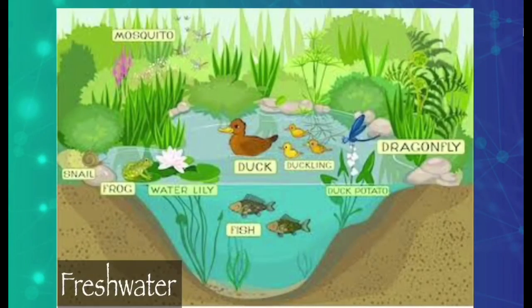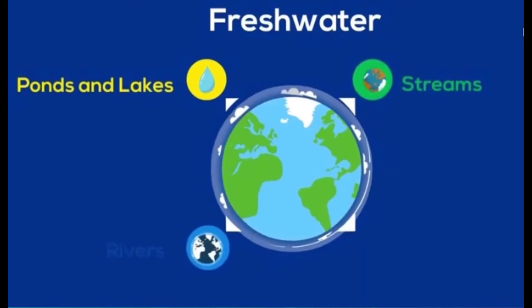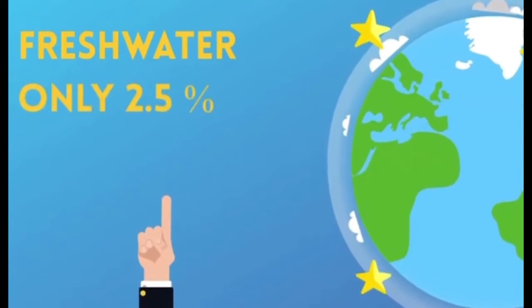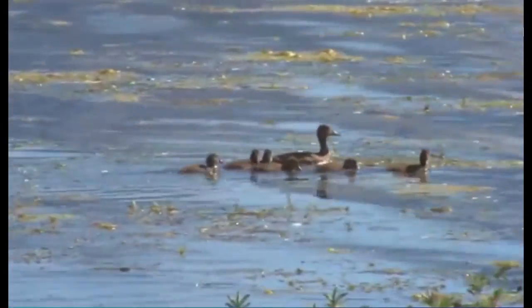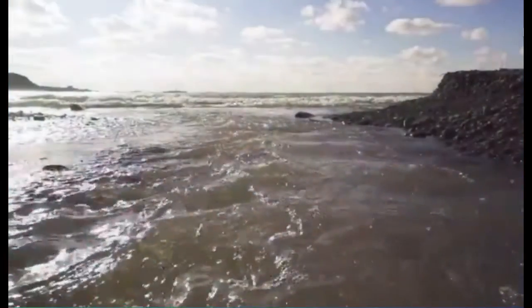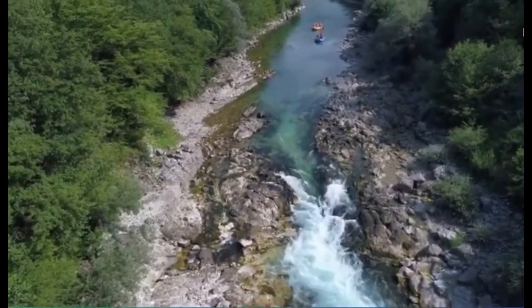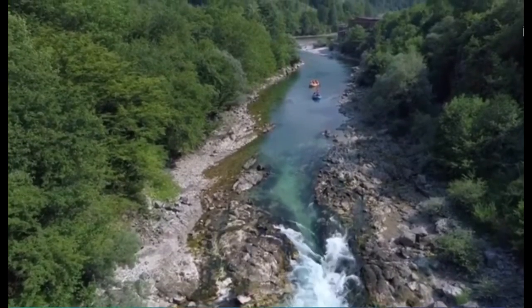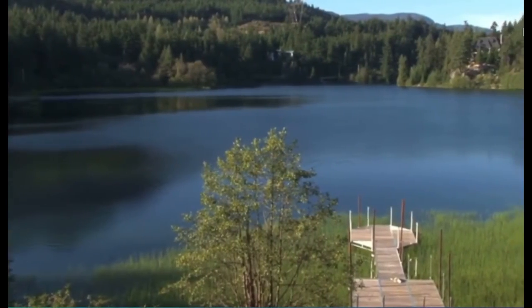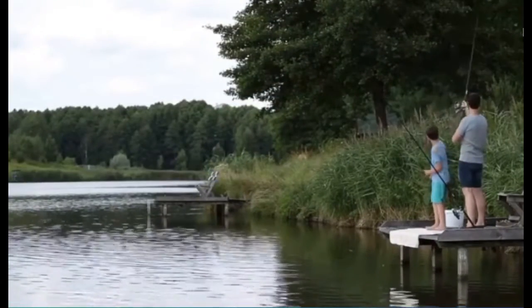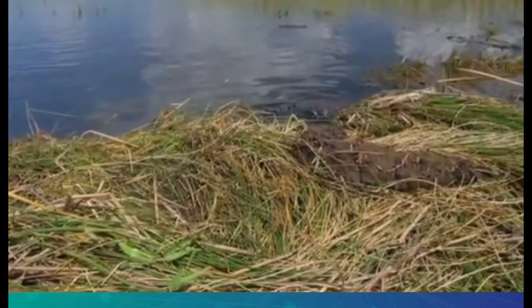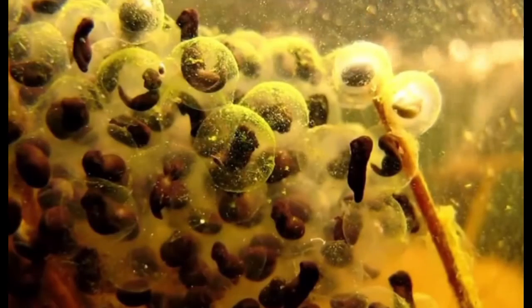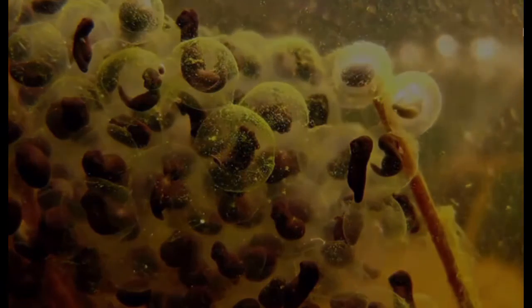Freshwater ecosystems: lakes, ponds, rivers, and streams are freshwater bodies with a low salt content. The water in lakes and ponds is still, while the water in rivers and streams is fast moving. Freshwater ecosystems support many aquatic plants and animals. In a pond, water plants are a source of food for aquatic animals; they also provide shade and shelter for the animals and their eggs.